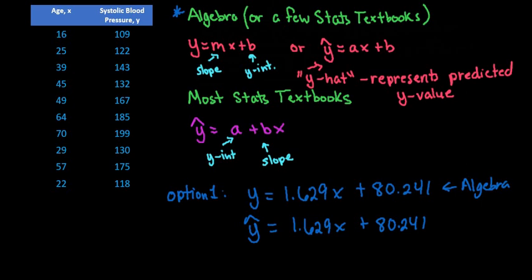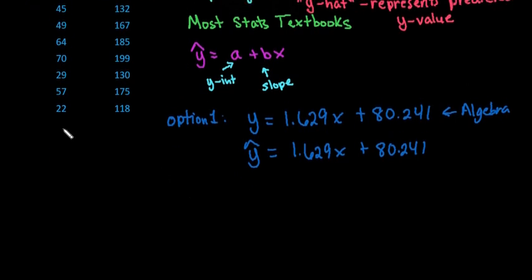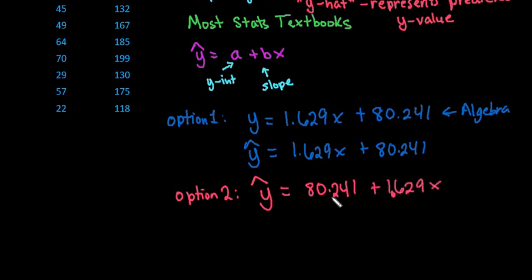So option two is for the other stats textbooks. And you would just say that y-hat equals 80.241 plus 1.629x. So it just reversed the order of the slope and the y-intercept.